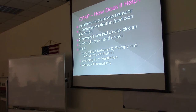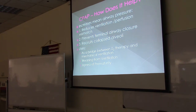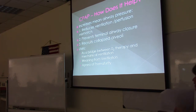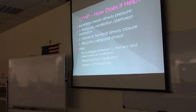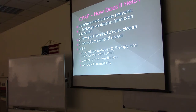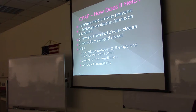Another way hypoxemia is treated is with CPAP — continuous positive airway pressure. When you deliver positive airway pressure and keep it in the lungs at all times, it increases FRC. An increase in FRC means more air in the alveoli and better gas exchange, so oxygenation improves. It reduces ventilation-perfusion mismatch by keeping the alveoli open, prevents terminal airway closure, prevents atelectasis, and recruits collapsed alveoli. CPAP is used as a bridge — if that doesn't work, then we go to mechanical ventilation.